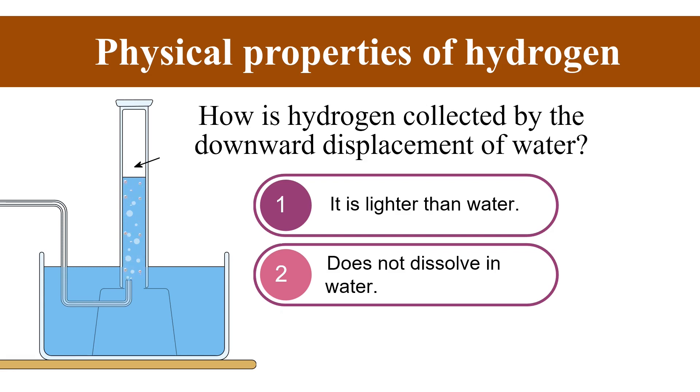Since hydrogen gas does not dissolve in water it forms air bubbles, and since it is lighter than water it rises up. So due to these two physical properties - the first one is it is lighter than water and the second is it does not dissolve in water - hydrogen gas can be collected by downward displacement of water.